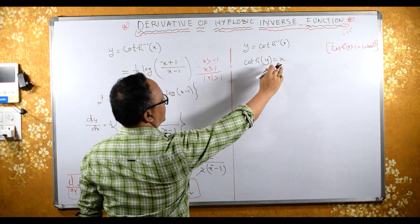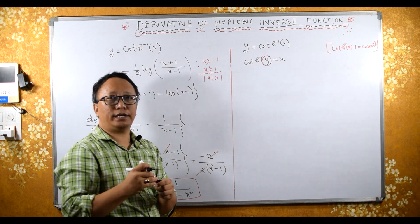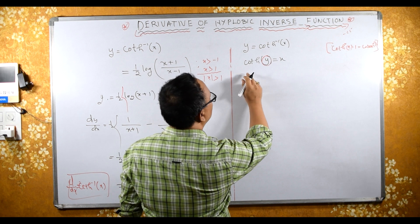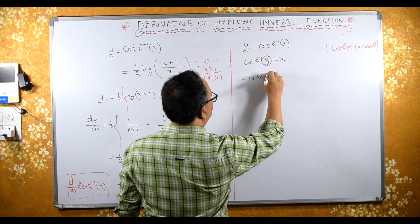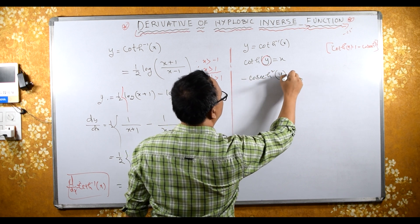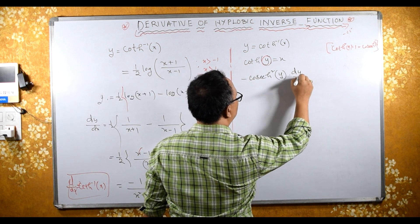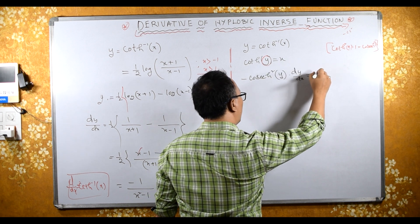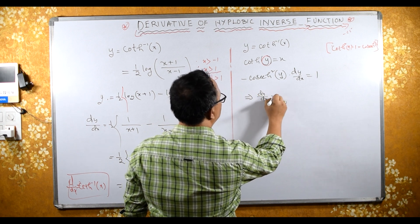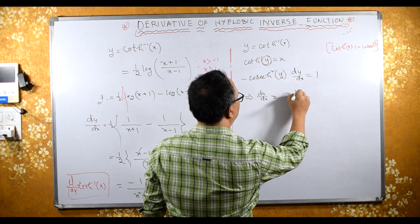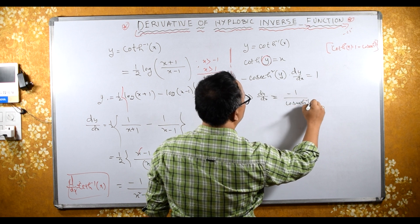Now differentiating with respect to x — be careful, we have y here but we differentiate with respect to x. The differentiation of coth is minus cosech squared y, and since y is there we multiply by dy/dx. The right side, dy/dx of x, is 1. Sending cosech squared y down: dy/dx equals minus 1 upon cosech squared y.